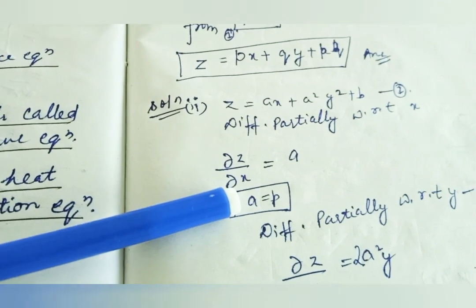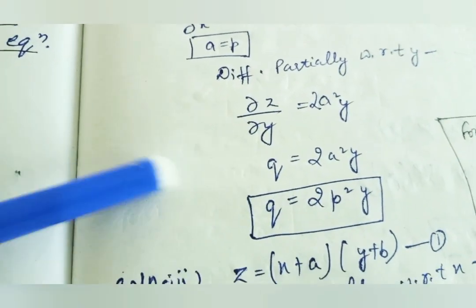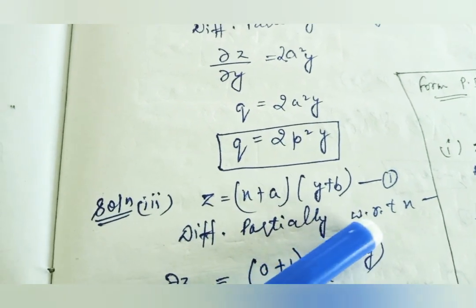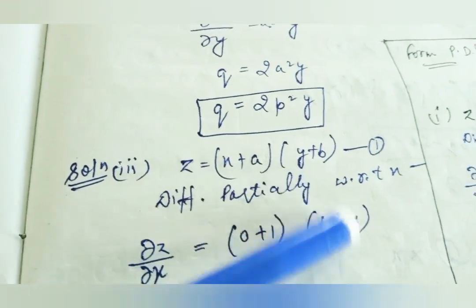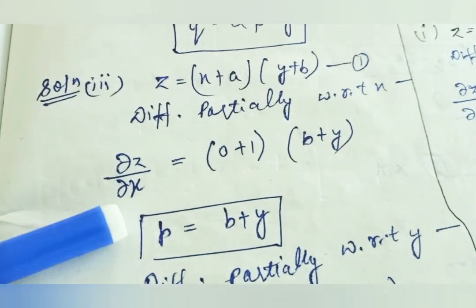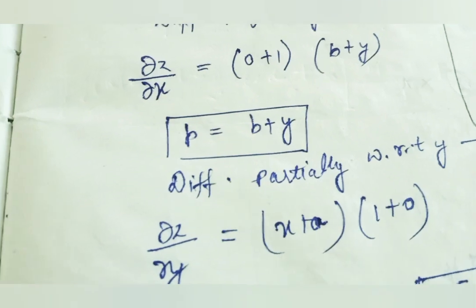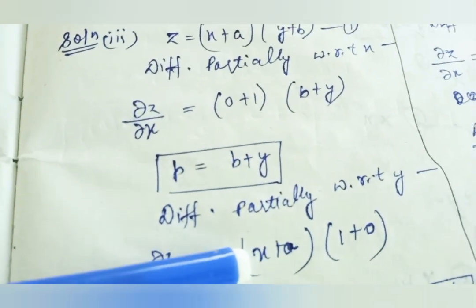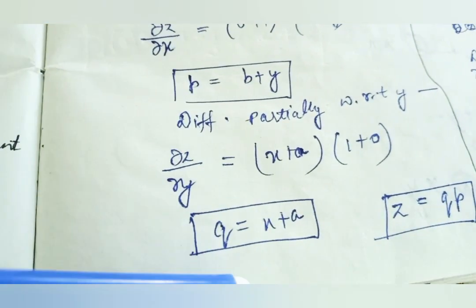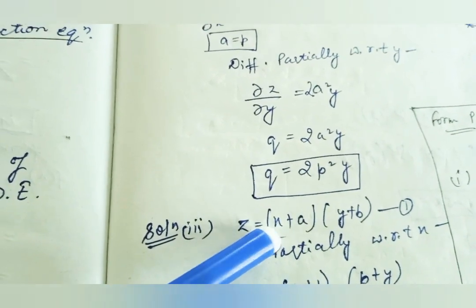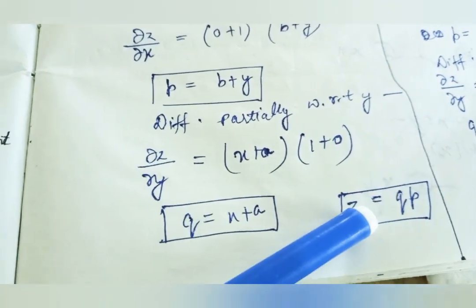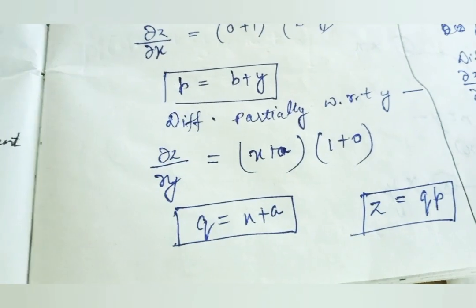This will be used in the equation and the partial differential equation will be prepared. Similarly, the third solution: with respect to A, then X gives B, then Y gives ∂z/∂x, then B + Y comes. The x becomes constant, and the value x + a and b + y are obtained — one in p form and one in q form. Substituting x + a and y + b into the second equation gives z = qp. This is the first order differential equation formation by elimination of arbitrary constants.